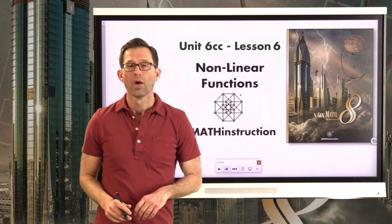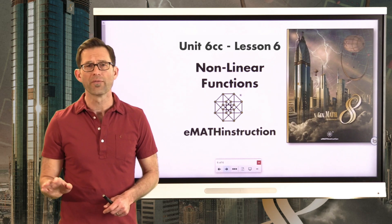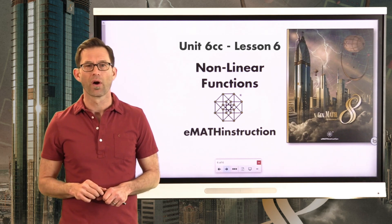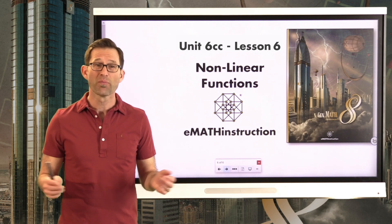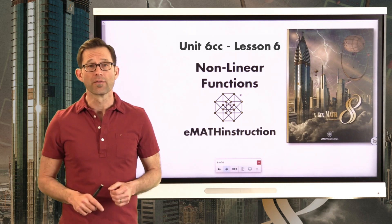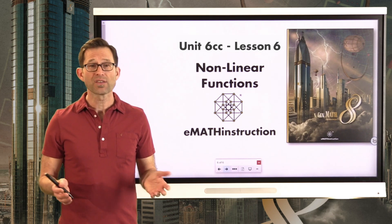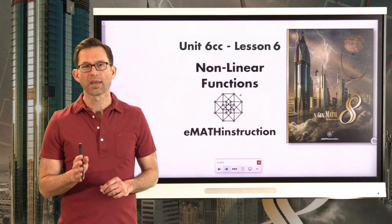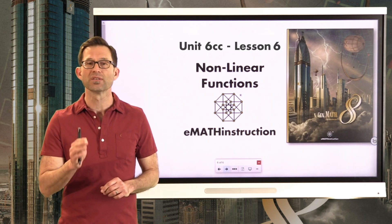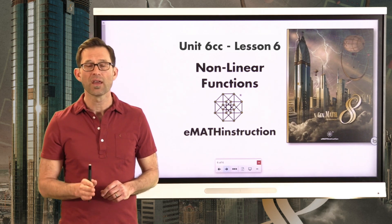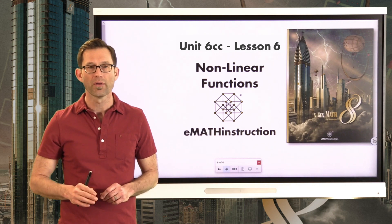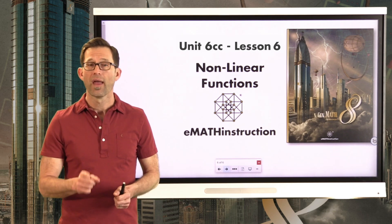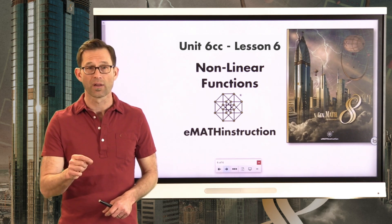Let's wrap this up. Today we introduced the idea of a non-linear function. All the functions we've concentrated on so far have been linear — when you plot them, all the points fall in a straight line. Non-linear functions are easy to spot on a graph: if the x, y pairs don't fall on a straight line, it's a non-linear function. We also looked at how to spot non-linear versus linear functions using tables: as long as x values are at a constant interval, if the change in y is constant the function is likely linear; if not, it's definitely non-linear.